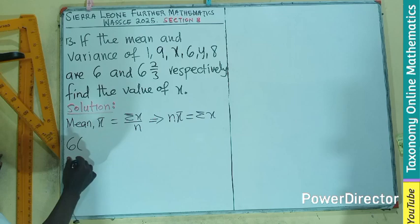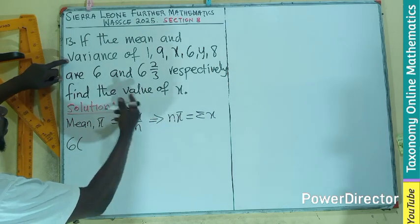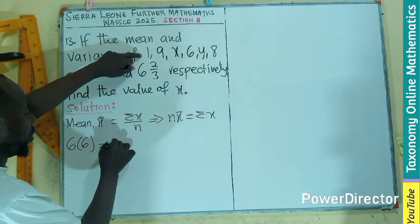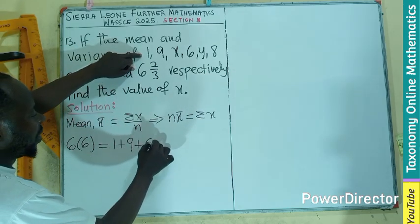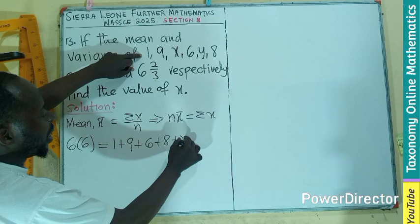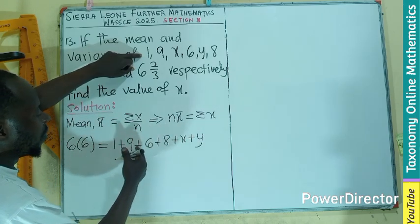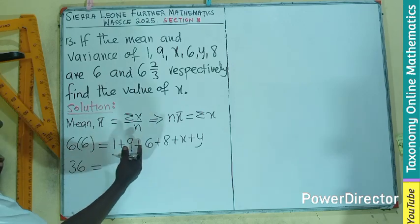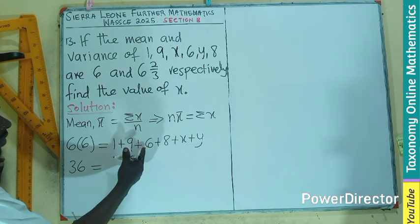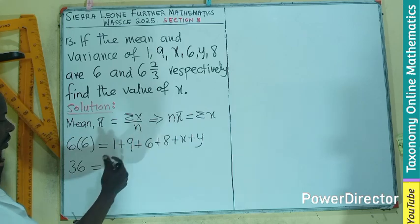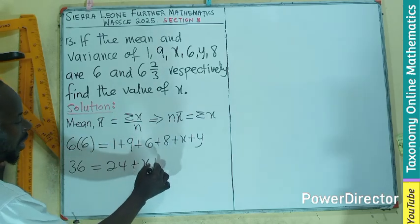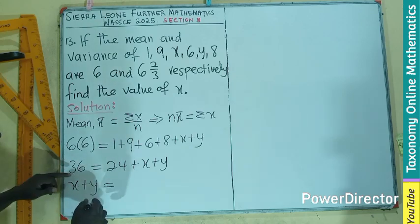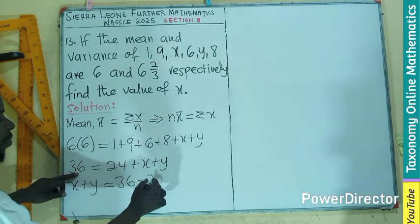So, I have 6 multiplying the mean for the question, giving us 6 equals to the summation, which is 1 plus 9 plus 6 plus 8 plus x plus y. This will give you 36. This will give you 10. So, 24, right? So, 24 plus x plus y.